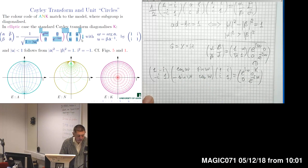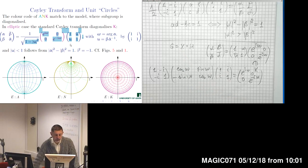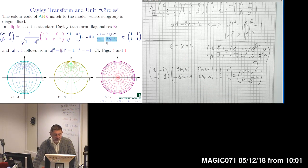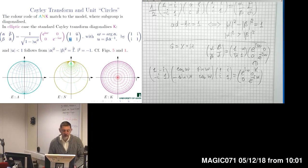If we have such a decomposition, it turns out that the element o here has norm less than one, so it belongs to the unit disk, since its representation is β divided by α in absolute value. As we said, from the identity for determinants, |α| > |β|, so the point o in the homogeneous space, which parametrizes cosets, belongs to the unit disk.